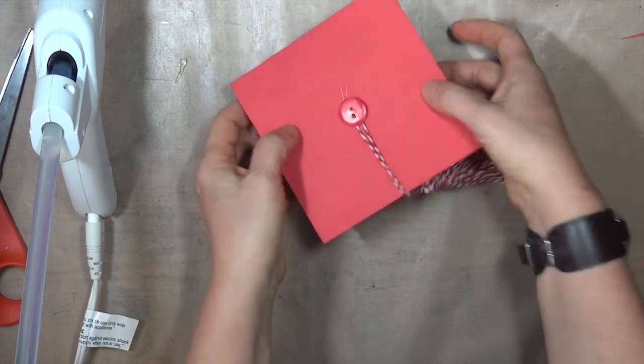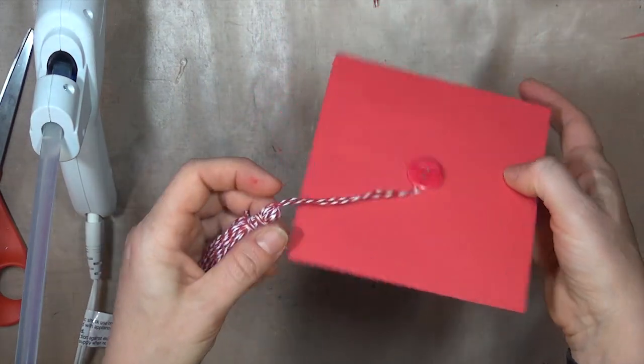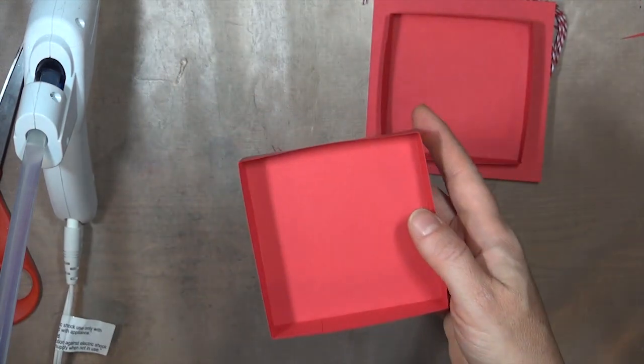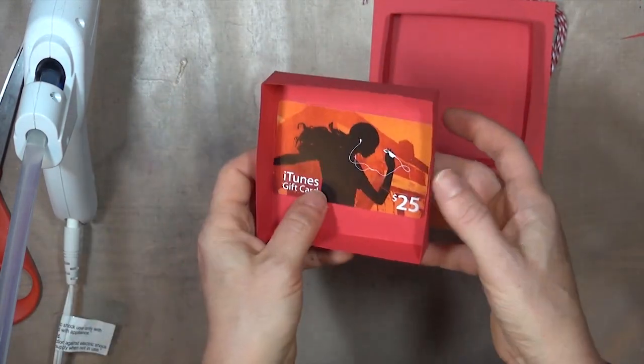The finished box is 3 1/2 inches across, so that's big enough to accommodate a 3x3 card, a gift card, or a folded check or cash.